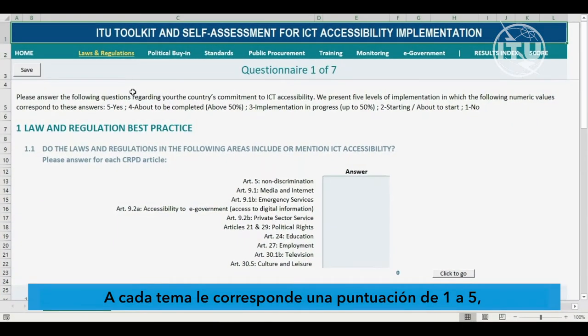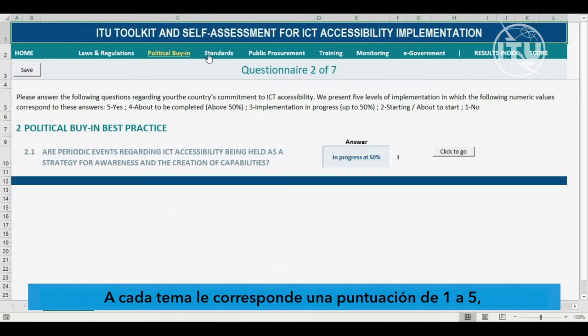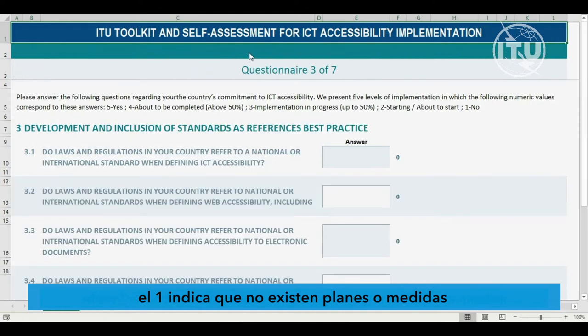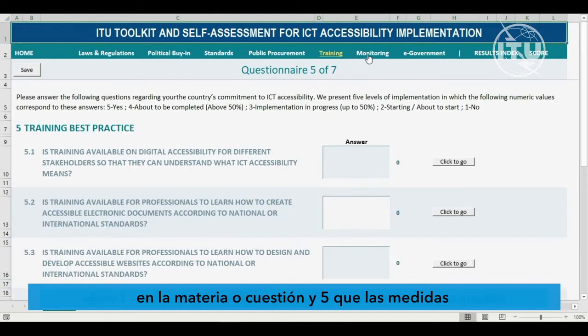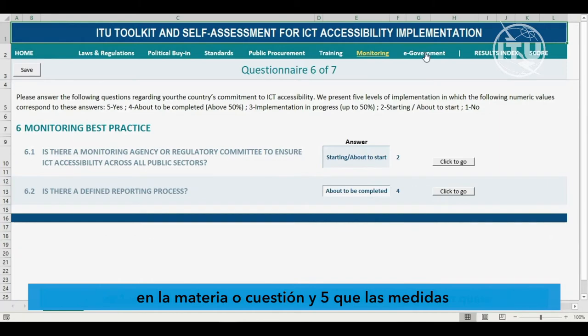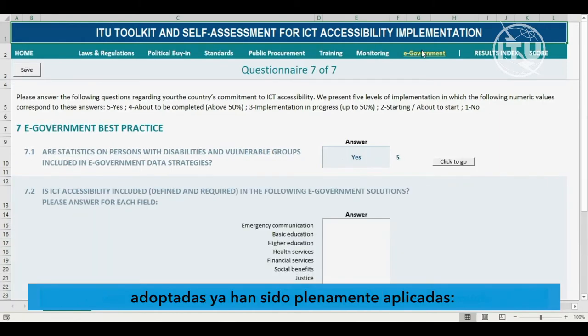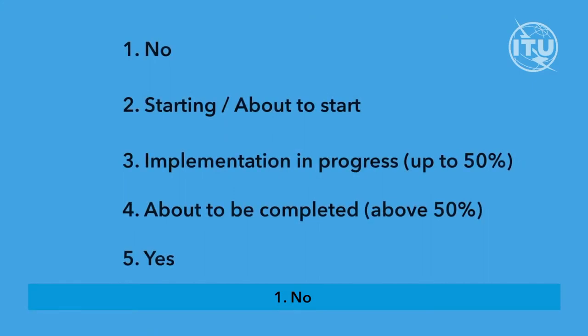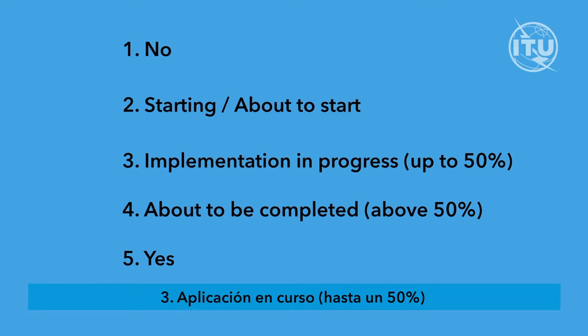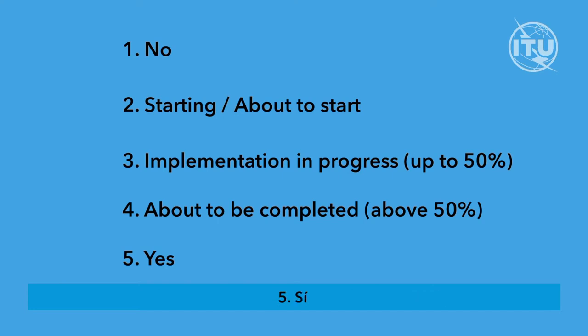Each topic has a scale of 1 to 5, where 1 indicates the absence of a plan or action for each item or question, and 5 indicates that the action has already been fully implemented. The five levels are: 1 — No; 2 — Starting; 3 — Implementation in progress, up to 50%; 4 — About to be completed, above 50%; and 5 — Yes.